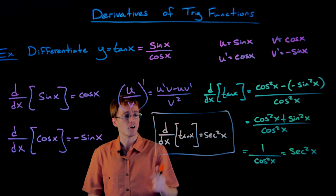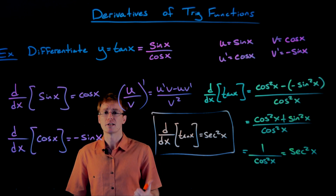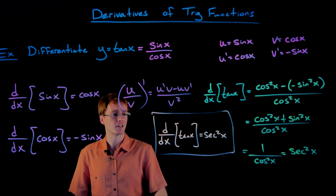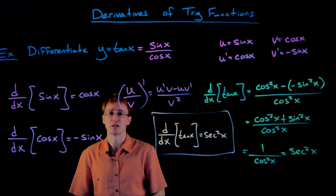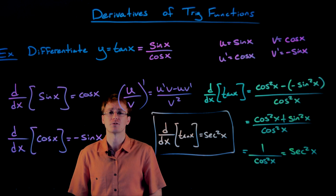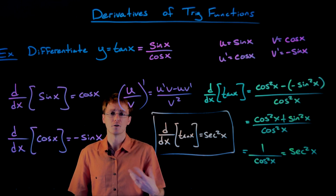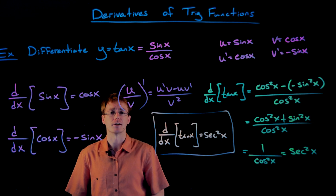All the other basic trig functions — cotangent, secant, and cosecant — we can find their derivatives in basically the same way: express them in terms of sines and cosines, and then use the quotient rule or whatever derivative rule is necessary.